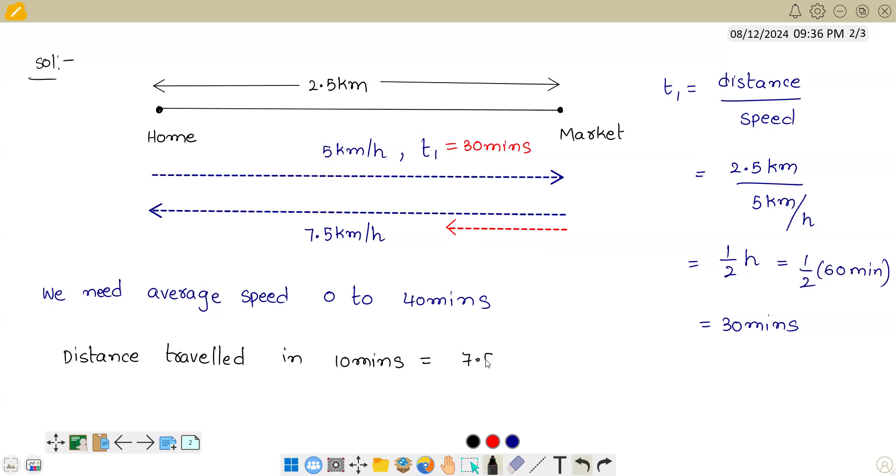The speed in reverse journey is 7.5 km per hour into 10 minutes. But since we want everything in hours, we can write 7.5 km per hour into 10. One minute means 1/60 hours. So let us try to solve this.